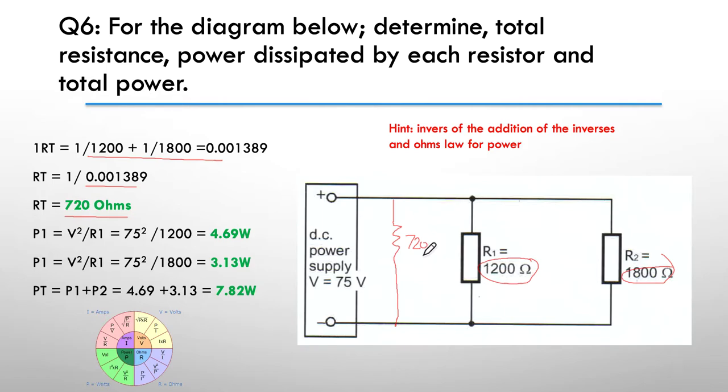So we now have got to work out the power, and the quickest way to do that is we know the supply's at 75 volts. So 75 squared divided by the resistance tells us that we've got 4.69 watts across R1. We've got 3.13 across R2, and then the final part of the problem was to get the power total, which we know is P1 plus P2. We add them together and we get a total power of 7.82 watts.